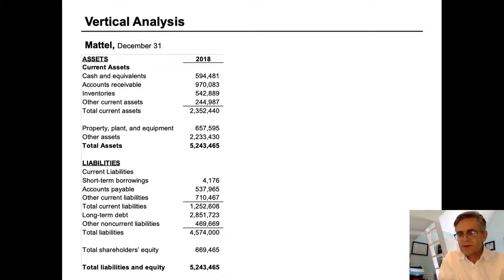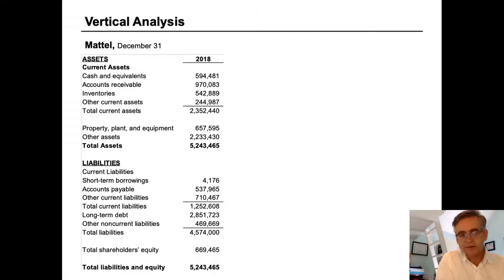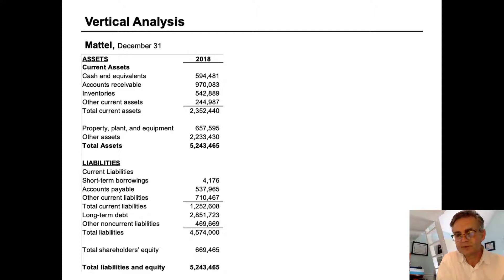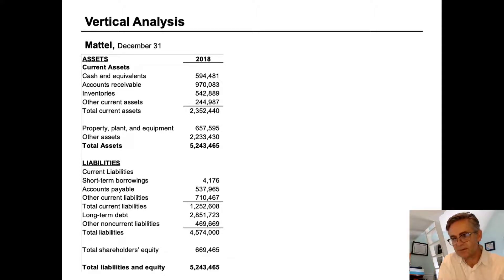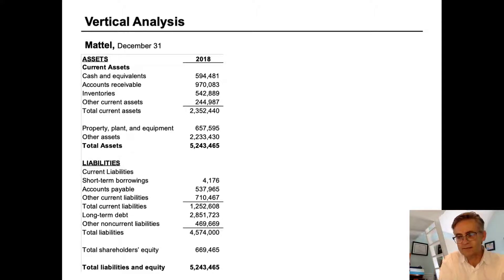Here is some financial information for the toy company Mattel, and we're going to use this as an example of how to conduct a vertical analysis. A vertical analysis is also called common size analysis or sometimes proportional analysis, and it allows us to compare how specific items on the company's financial statements are changing in proportion to each other. It's especially helpful when we're comparing two companies of different sizes and when we're comparing across industries.